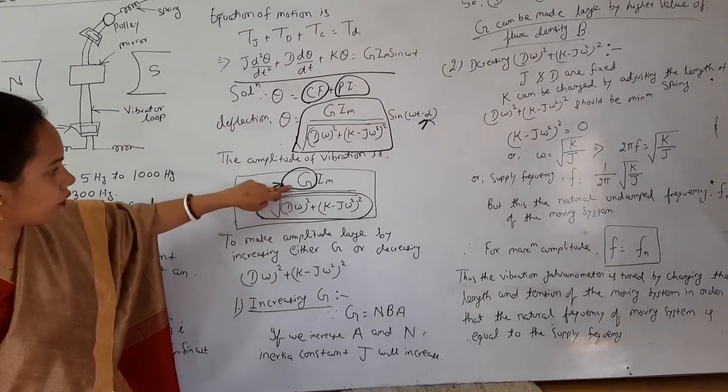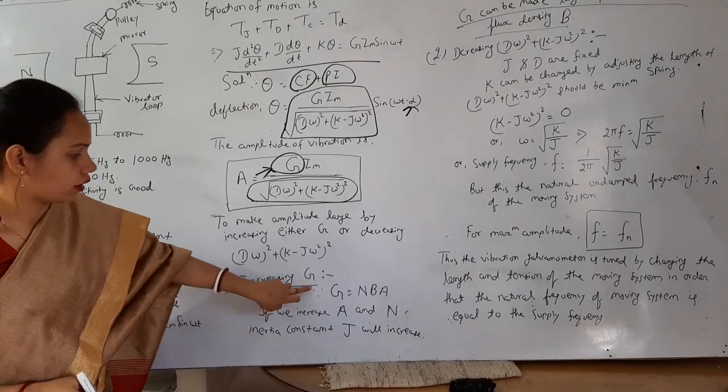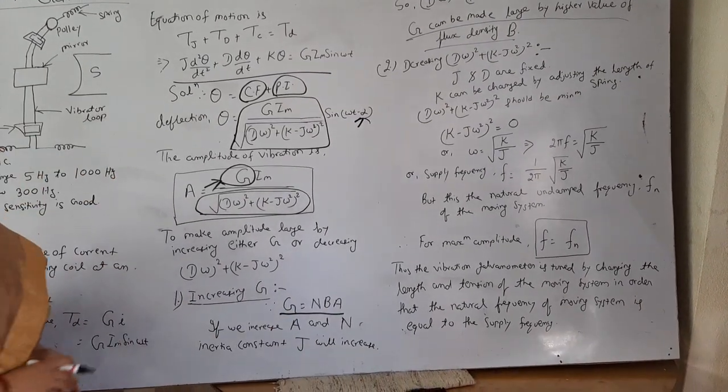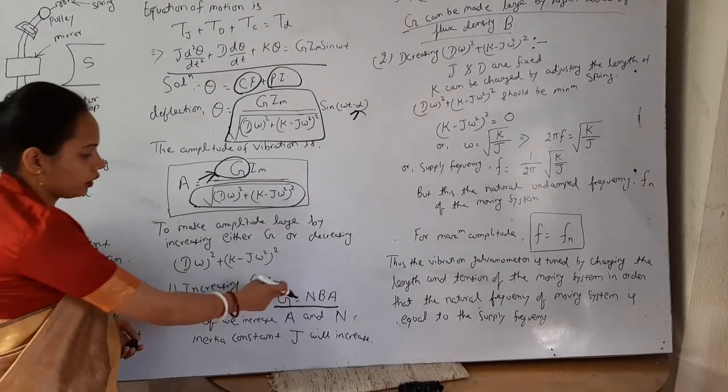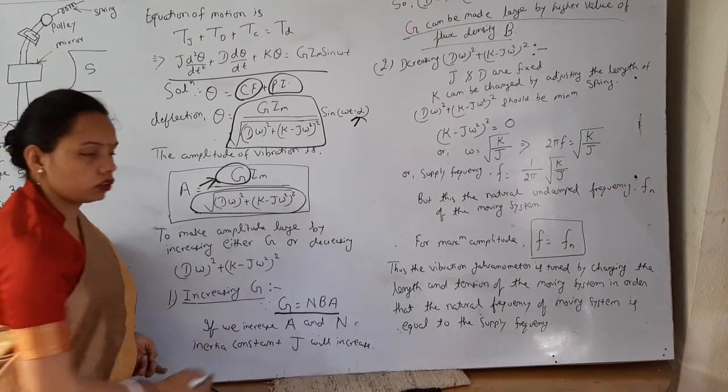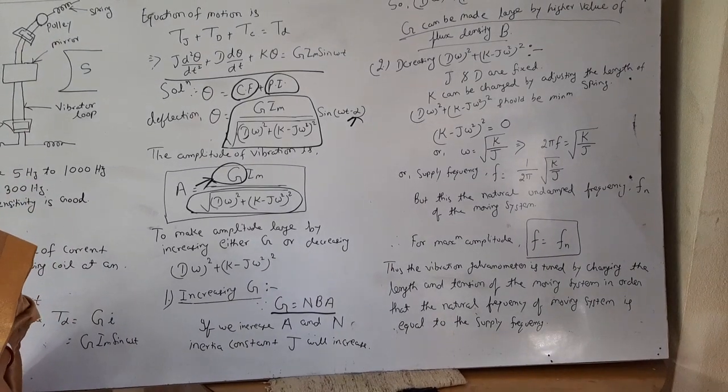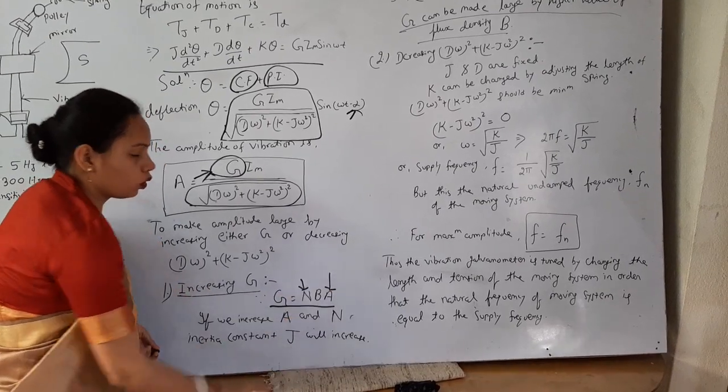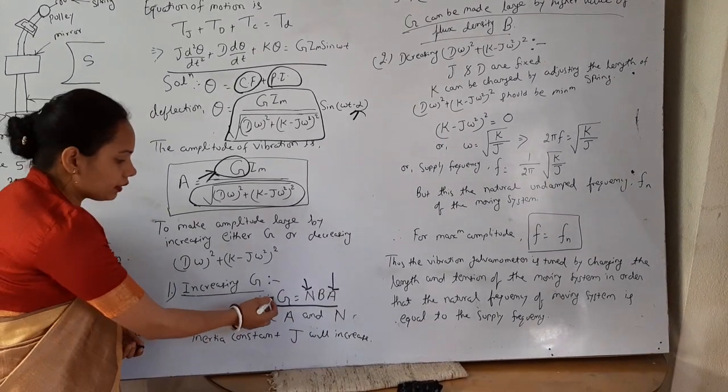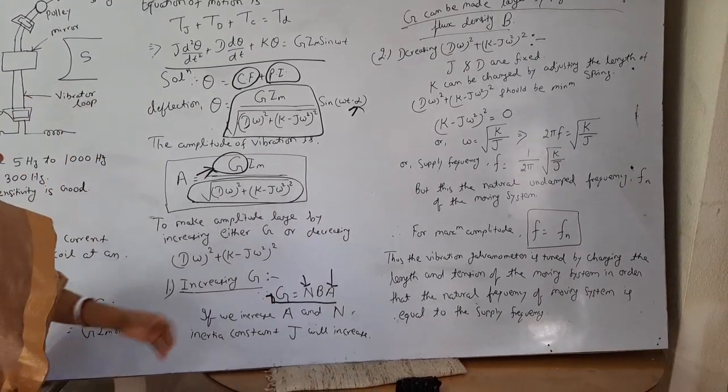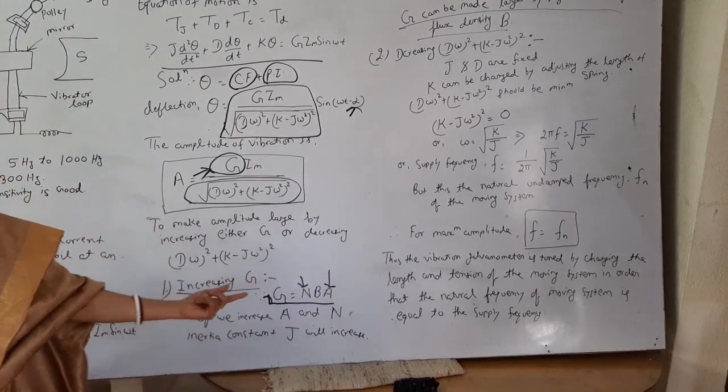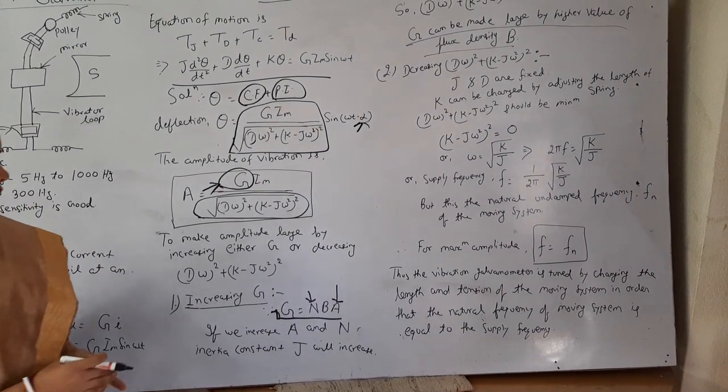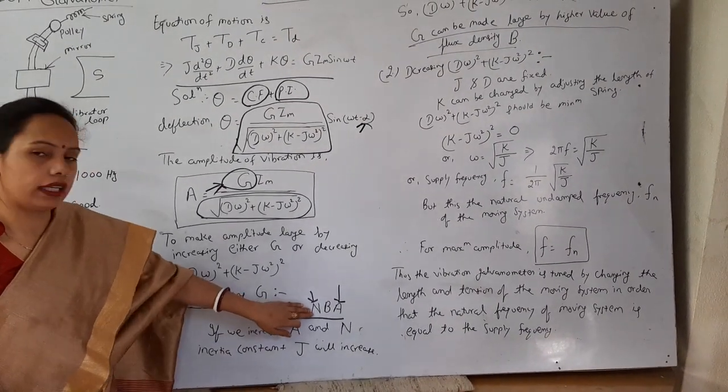So first of all, we should have to increase the G galvanometer constant. G, as we already know, is equal to NBA. N is your number of turns, B is your flux density, and A is your area of the coil. So if we increase number of turns and area of the coil, G will be increased. But the moment of inertia is also increased due to heavy mass of the coil.